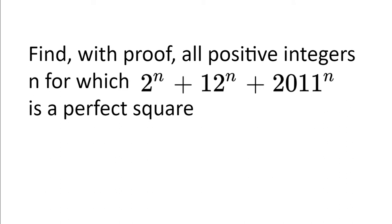Find, with proof, all positive integers n for which 2 to the power of n plus 12 to the power of n plus 2011 to the power of n is a perfect square.